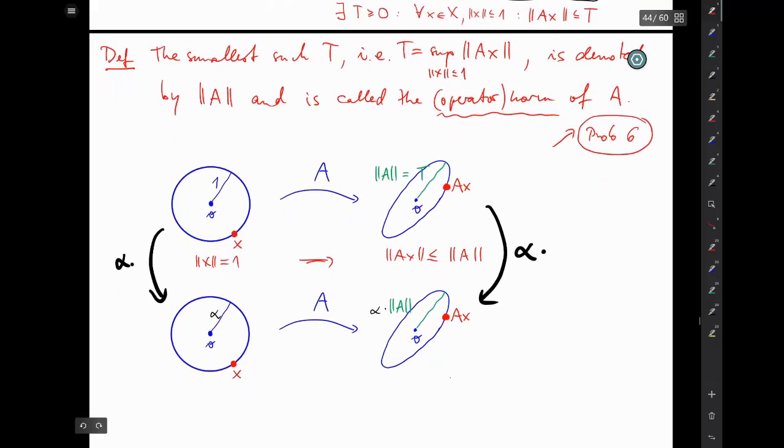So we conclude that if norm of x equals alpha, then norm of Ax is less than or equal to alpha times norm of A.